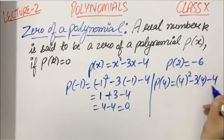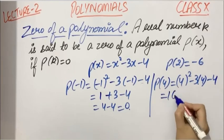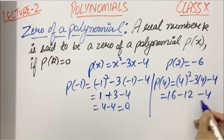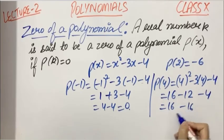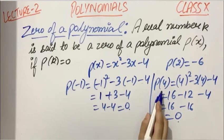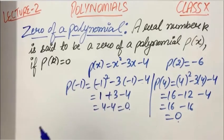Now find its value at 4: P(4) = 4² - 3(4) - 4. 4 squared is 16, minus 12, minus 4. 16 - 16, it is again equals to 0. According to the definition, -1 and 4 are the zeros of this polynomial.